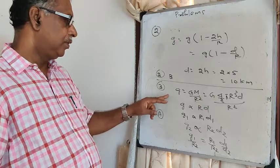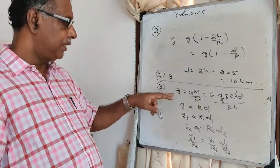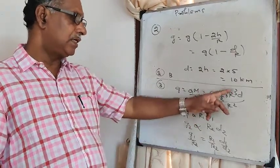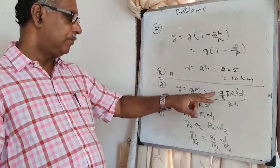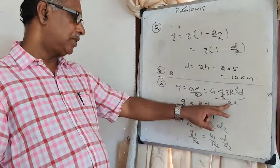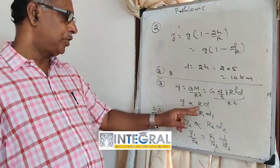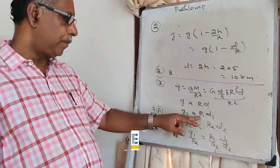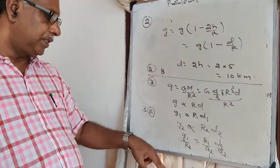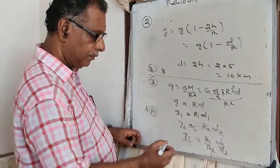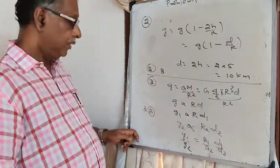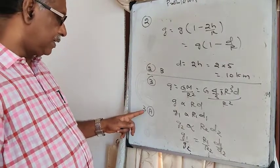Question 3: From g = G·M/R² and M = (4/3)·π·R³·D, we get g ∝ R·D. Therefore g₁/g₂ = (R₁·D₁)/(R₂·D₂). The answer is A.